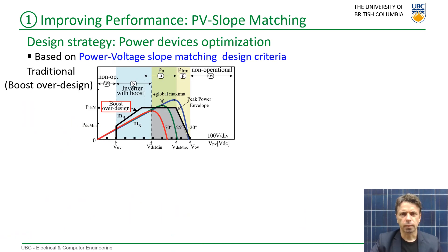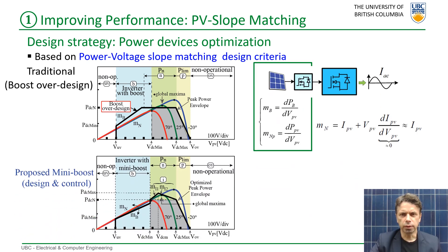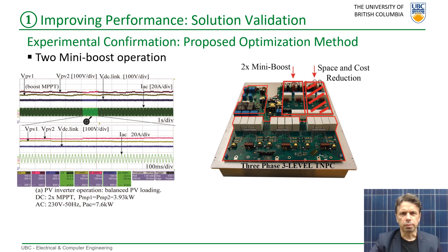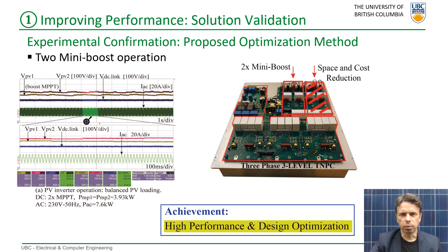Using the power gradient controller, let's optimize the boost and inverter components. With this approach of slope matching design criteria, the size and cost achieves a 40% reduction. The proposed 2-mini boost approach is validated, resulting in stable operation, reduced cost by 40%, and optimized design.